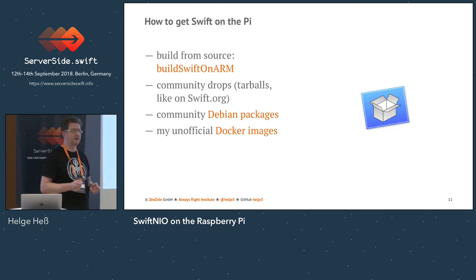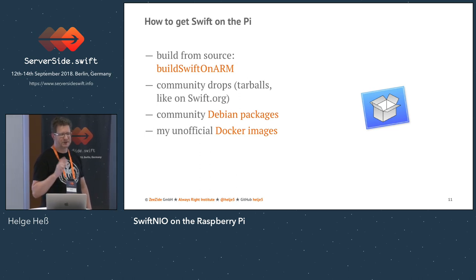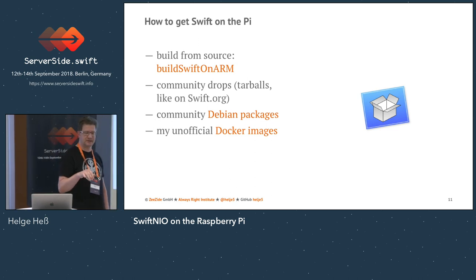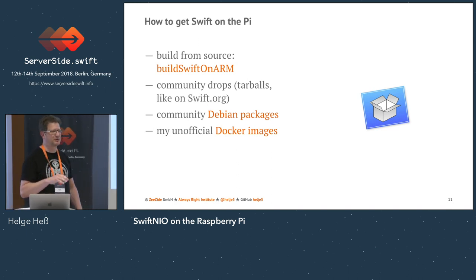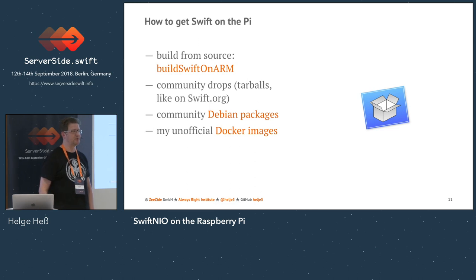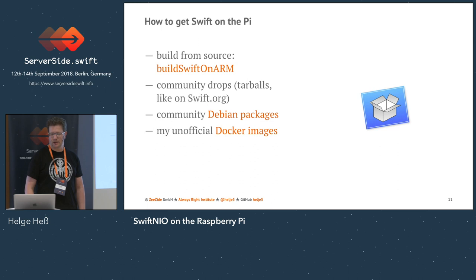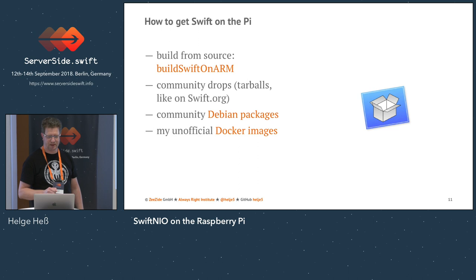The next question is: how do I get Swift on this? There are a few options. First, you can build it from source — go to the GitHub page of Swift, grab the compiler sources and build it. There's a web page called buildSwiftOnARM which explains how. But note: on a Raspberry Pi 3 it takes eight hours; on a Raspberry Pi 2, three to four days; and on a Pi Zero, I don't want to talk about that. It's better to go to the community and ask for tarballs — like the ones you get on swift.org for Intel. There's also one person providing Debian packages for 64-bit Raspberry Pis. I maintain Docker images on Docker Hub — search for rpi-swift. That's what I use for all demos, because it's so convenient and stable.